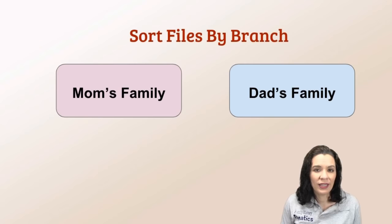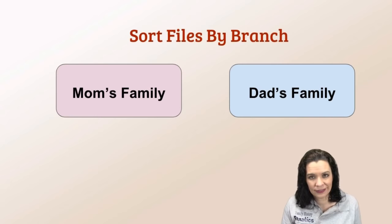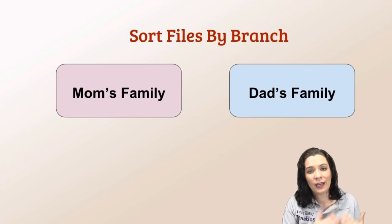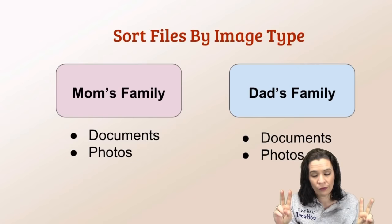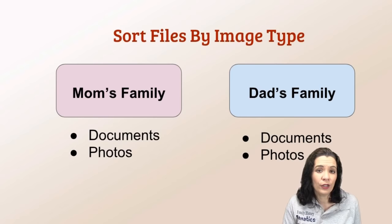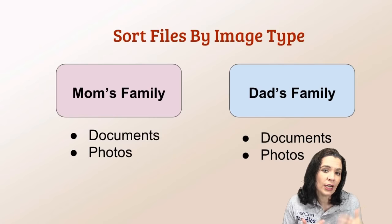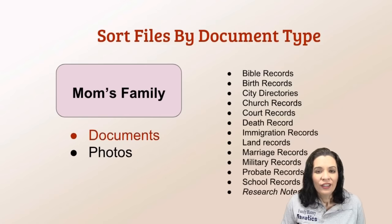The first thing I do — because I really just have two branches — is I have mom's line and dad's line. Eventually mom's line and dad's line will become somebody's grandma and grandpa, but for now this makes a whole lot of sense for me. Under mom's line and dad's line, I have two major folders: documents and photos. Where Randy had genealogy reports, I would just put those under documents. It makes things simpler for me.